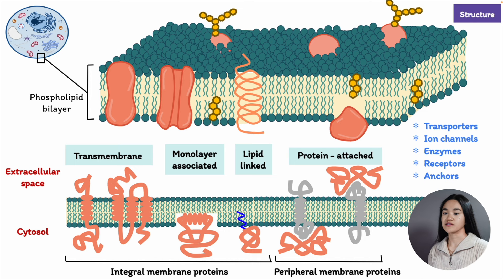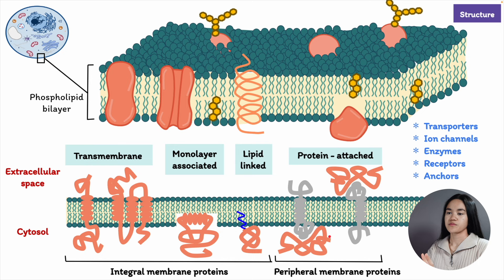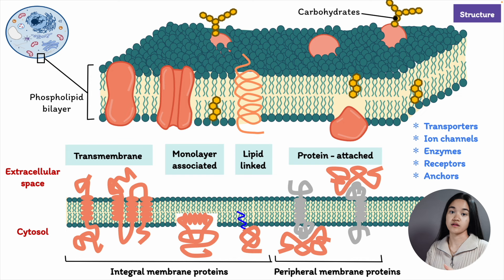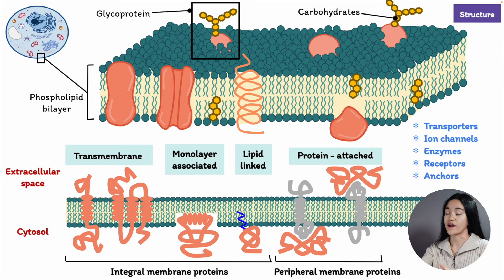The other type of membrane protein is the peripheral protein. These proteins are not embedded into the phospholipid bilayer — they are found on the inner or outer edge of the membrane and are loosely linked to the membrane surface. One last component are the carbohydrates. They are found on the exterior surface of cells and are bound to other proteins forming glycoproteins, or they are bound to lipids forming glycolipids. They form specialized sites on the cell surface that allow cells to recognize each other.